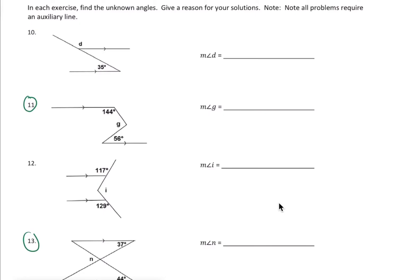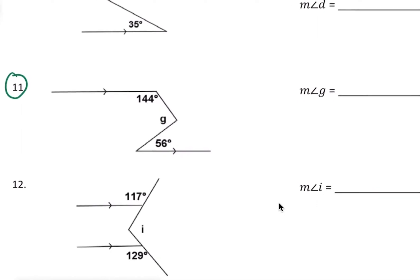To solve this guy we want to find out what G is. It might be easier for us to solve if we had an auxiliary line. So I'm going to draw an auxiliary line and make this line parallel to the other two lines.